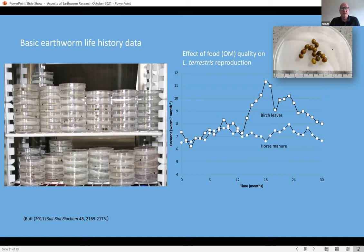Looking at basic life history — this is something we've done in our laboratory with many different species. With Lumbricus terrestris, having collected cocoons sieved out of soil where adults have been kept, they can be put into petri dishes and kept at constant or varying temperatures to obtain hatching eventually. One thing we were interested in was the nature of food given to the earthworms and whether it mattered for the number of cocoons produced. We were comparing horse manure and birch leaves, and found that green leaves taken from the tree led to greater production of cocoons. So the type of food worms get is very important for their reproductive output.